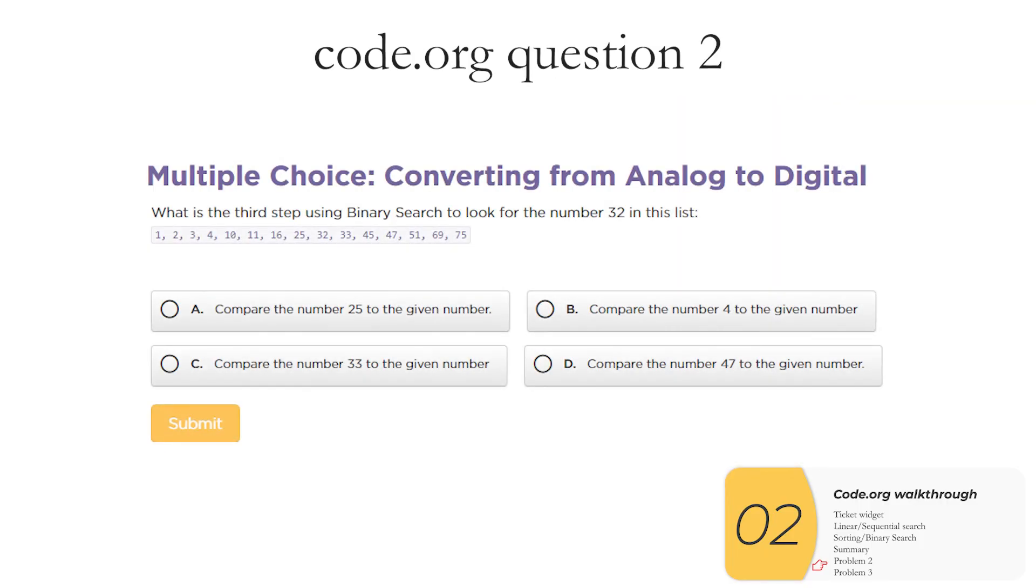All right code.org's question two. What's the third step using binary search? It's basically asking how the binary search works. We start by taking the number in the middle which is 25 and we're looking for 32 so we go higher. So we cut it in half take the number in the middle and that's 47 and 32 is lower. So we cut what's remaining in half one more time. Remember all of this works because we're searching for a number we could sort it from high to low or low to high it doesn't matter as long as whatever we're searching for you're sorting by the same way.